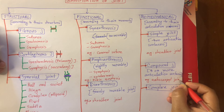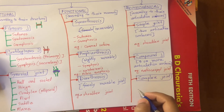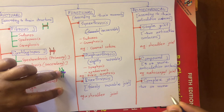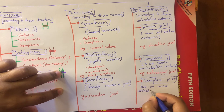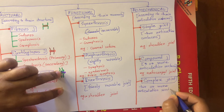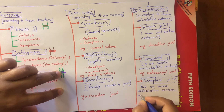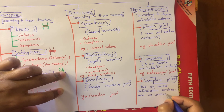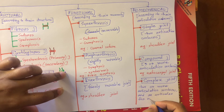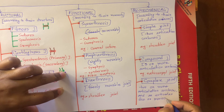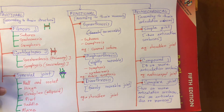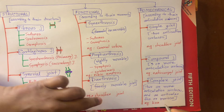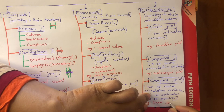A complex joint is where two or more articulation surfaces and an articular disc or meniscus are present. This is a complex joint. For example, the knee joint.